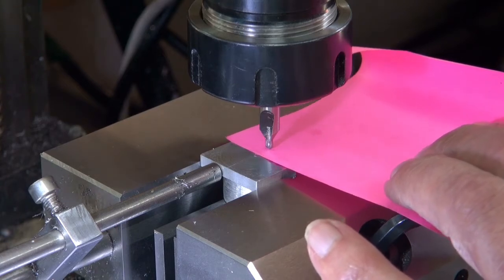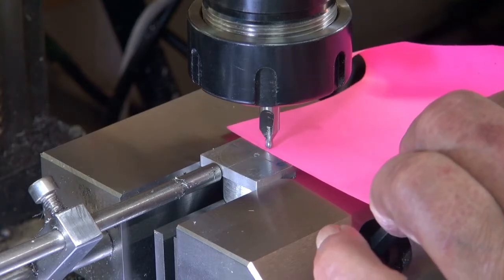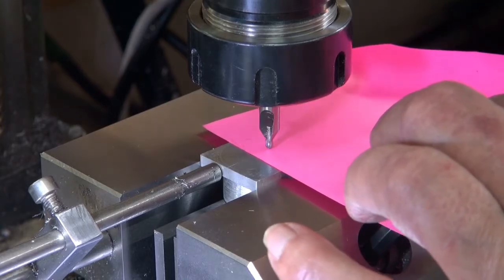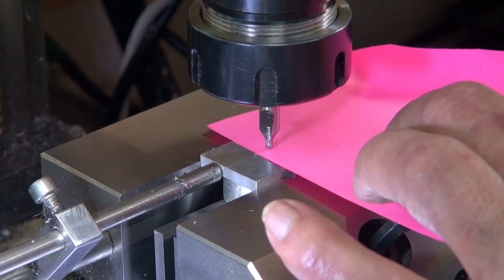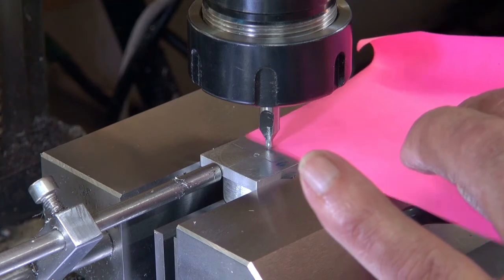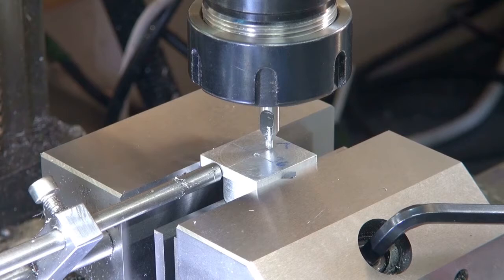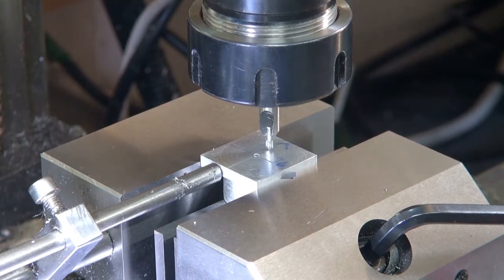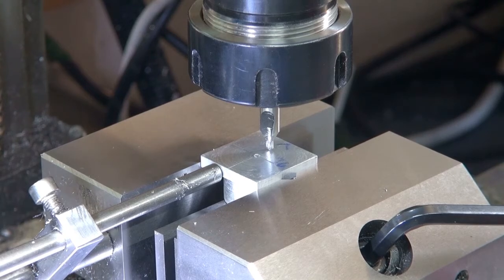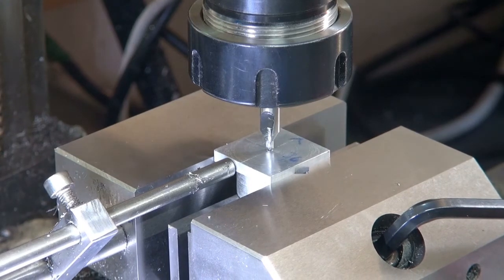This is a silly way of getting a zero, but it works. Just keep jogging it down. Paper's just starting to drag under the cutter. That's about it. So I'll just set the Z0 on that. I'll now move the center drill to the center of the work. So I'll just press go to zero. There we are. We're centered again.